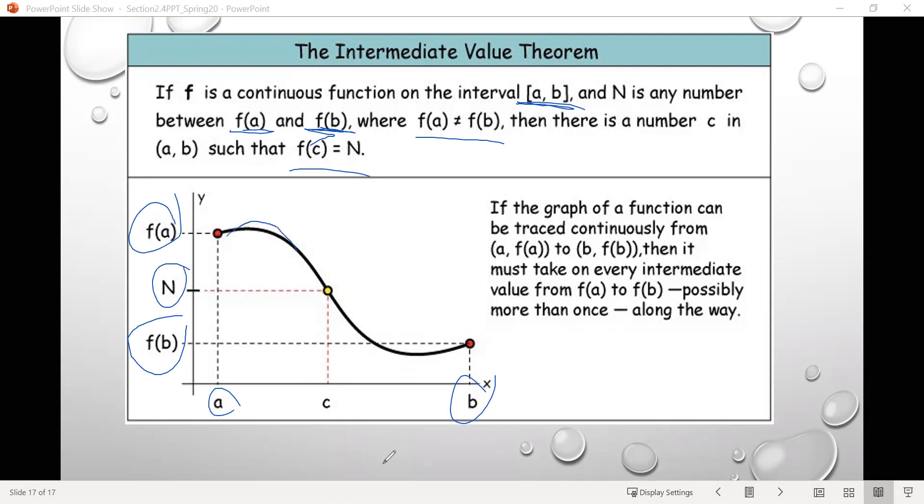And because the function is continuous, when we trace along it, there has to be some input value. In this case, they're calling it c. Where if we input that value into the function, we get an output of n. And again, that's dependent on the fact that this function is continuous. All right? Thank you guys for your attention.